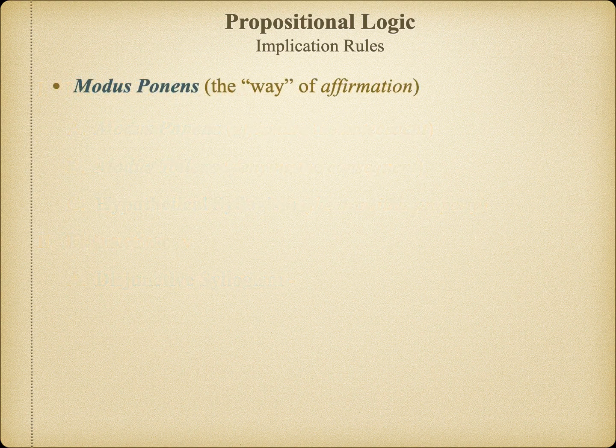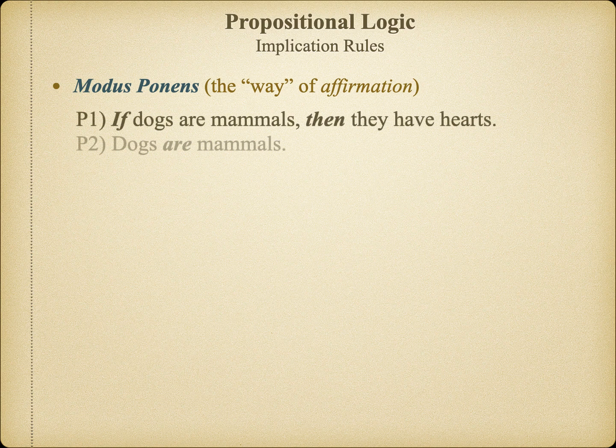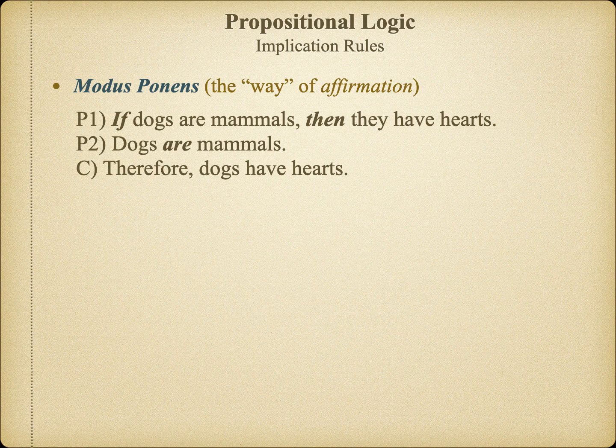Of all the valid forms of ordinary language arguments, none is more well known than modus ponens. Starting from a single conditional statement, all we need to do is affirm the antecedent as the second premise in order to conclude the consequent. This is because the antecedent of a hypothetical claim is supposed to be a sufficient condition for the consequent. Whenever I have the sufficient condition, I should have the consequent.